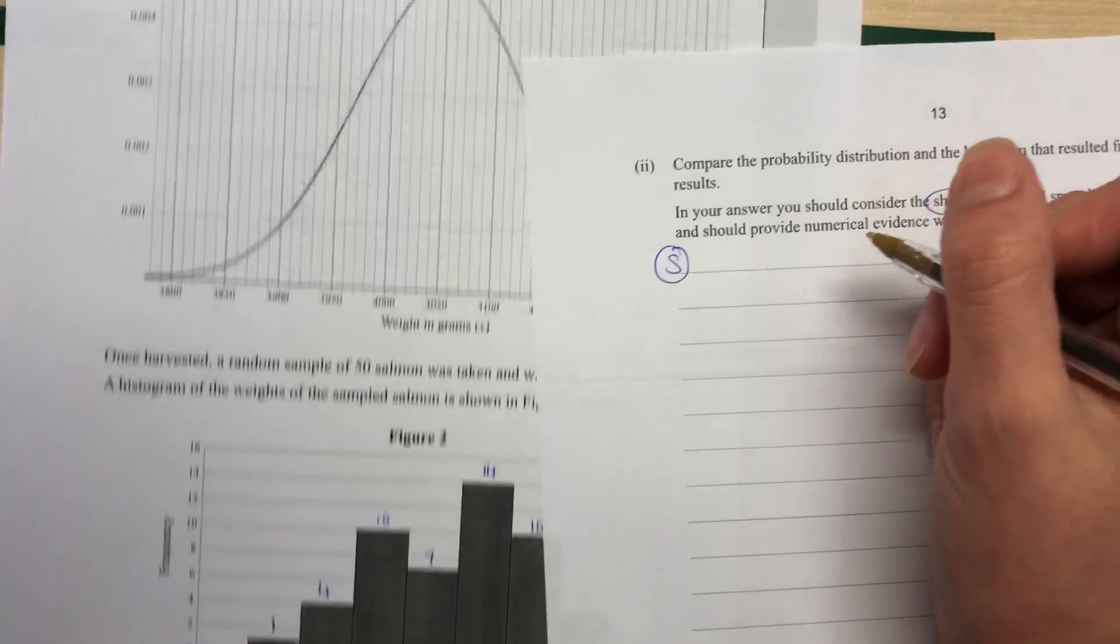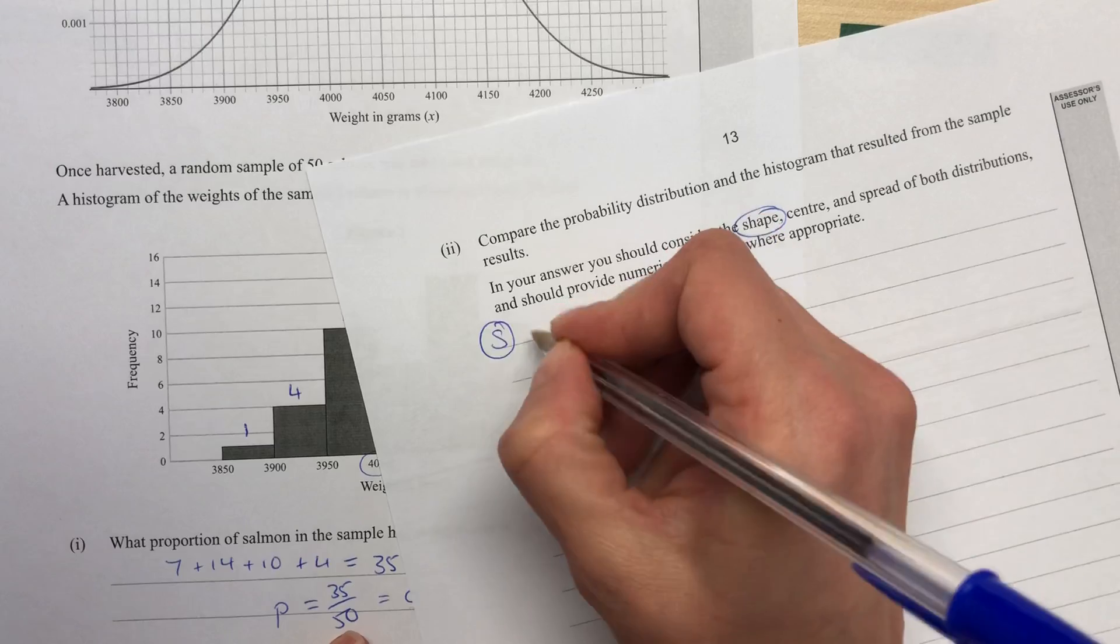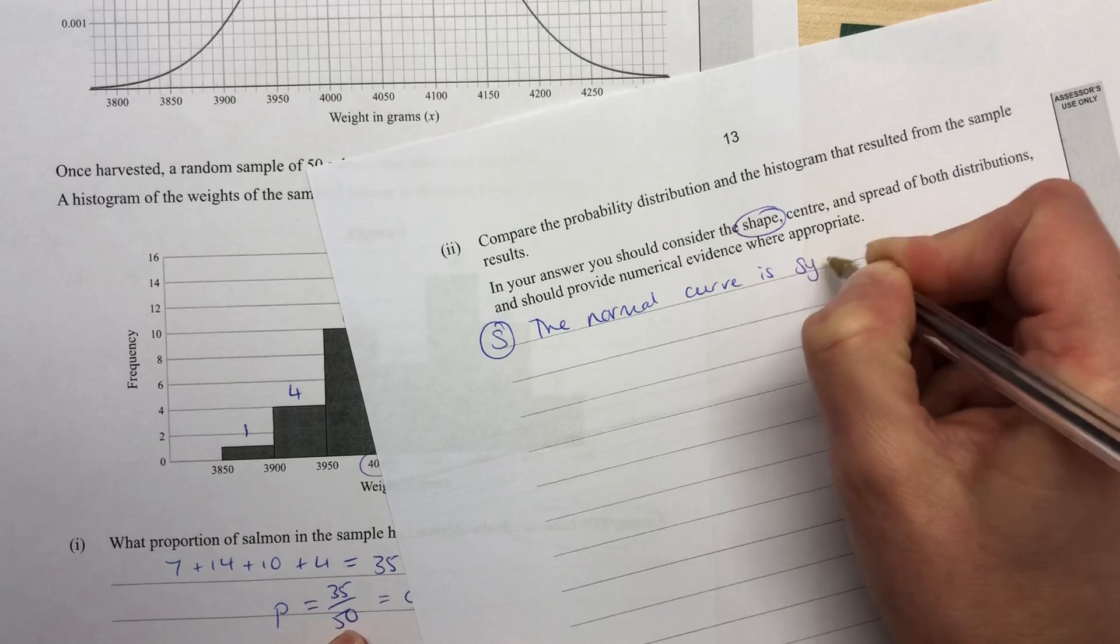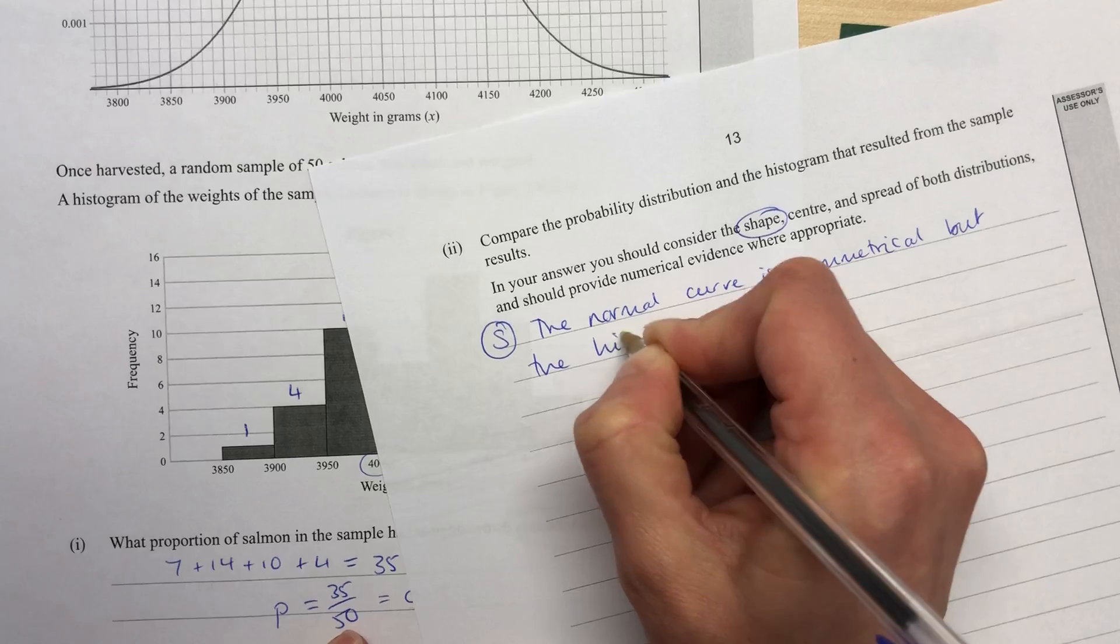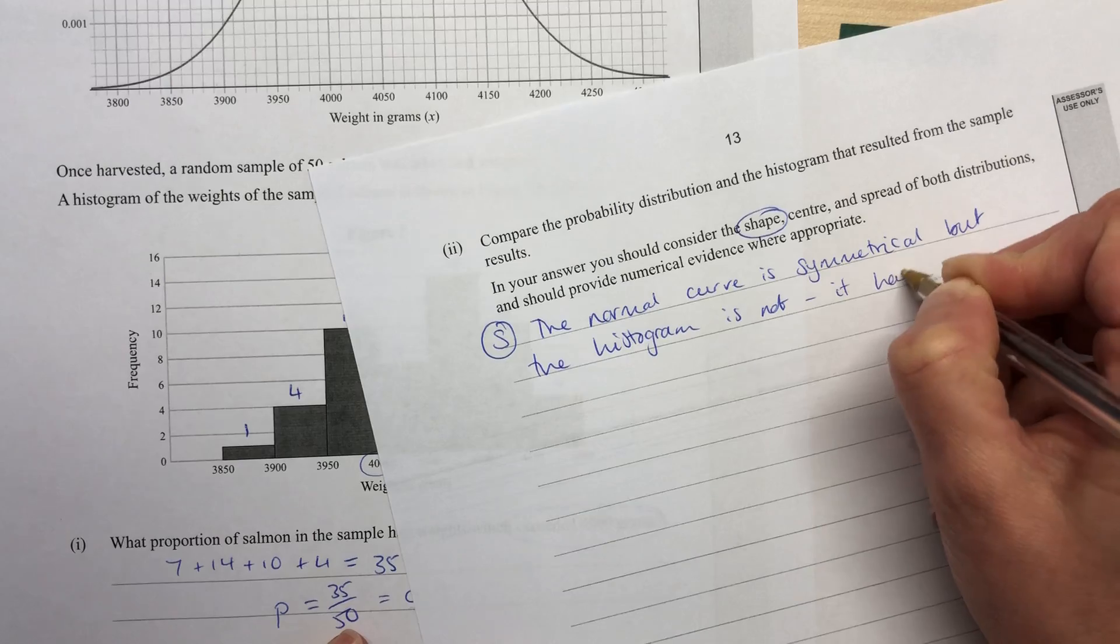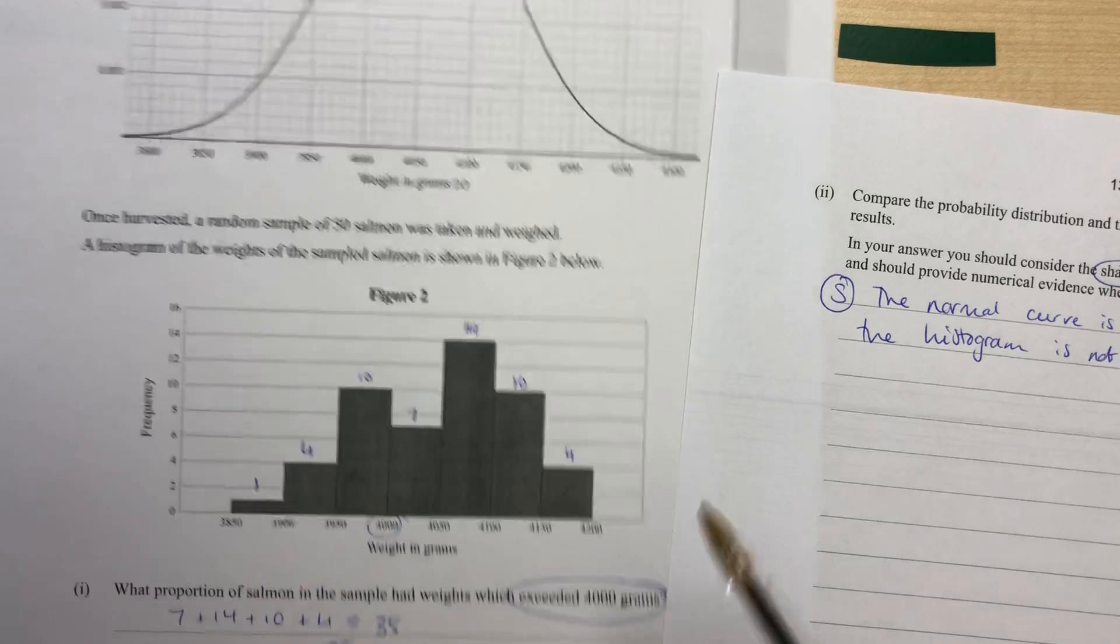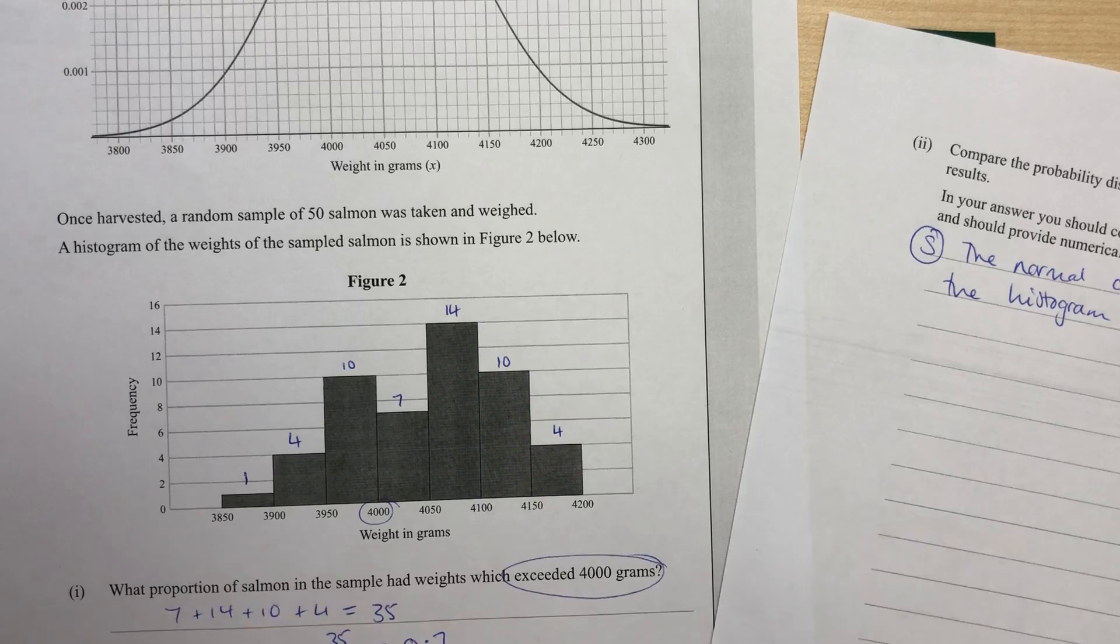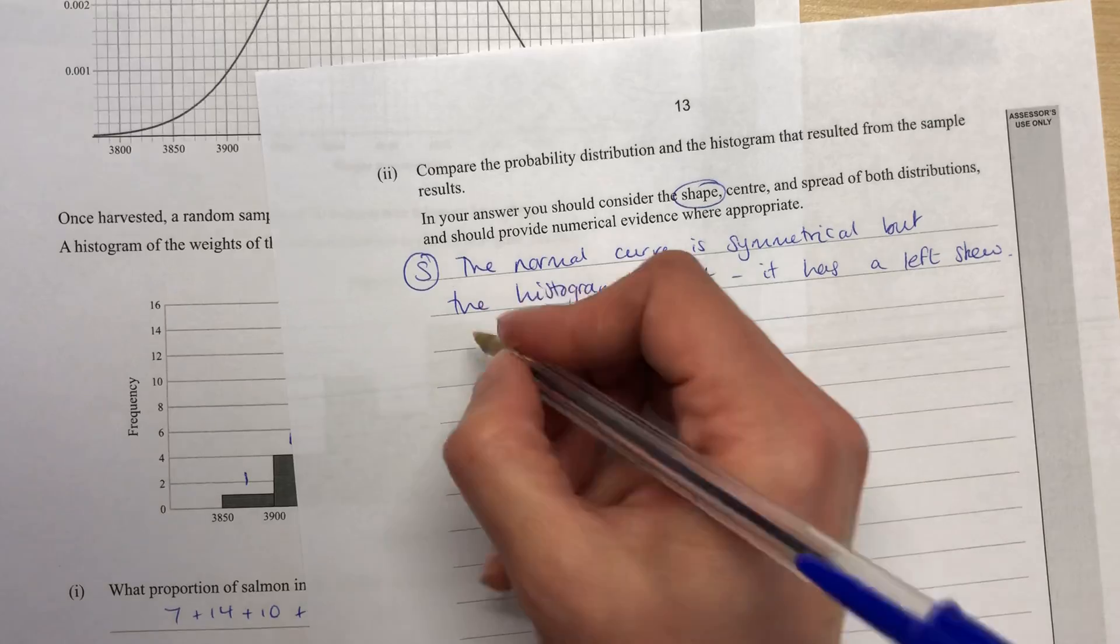So if we start off with the shape, so we can have a look at the shape of this curve compared to the shape of the distribution. So the normal curve is symmetrical, but the histogram is not. It has a left skew. So you can have a look at that one there. We can see it's kind of going like this. It's bunching up to the right with a left-hand tail, so it has a left skew there.